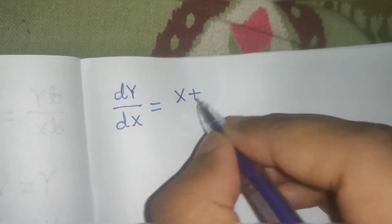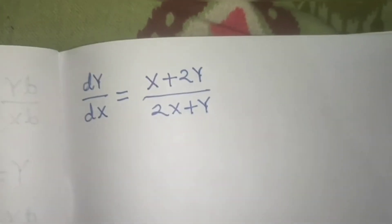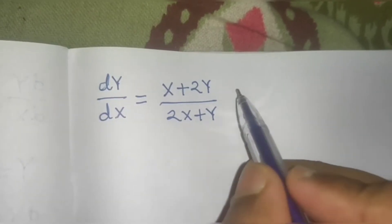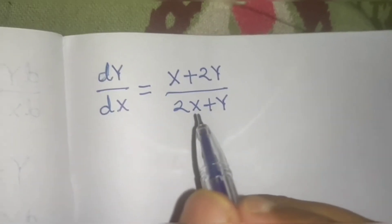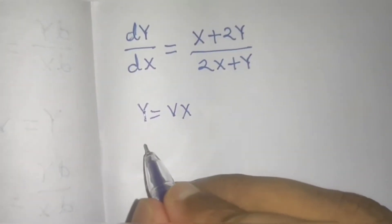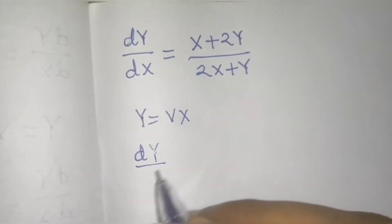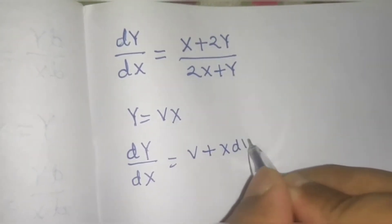Once the constant terms become zero, dY/dX equals (X + 2Y) / (2X + Y). This has been converted to a homogeneous equation. Now we take Y = vX. Differentiating both sides: dY/dX = v + X * dv/dX.